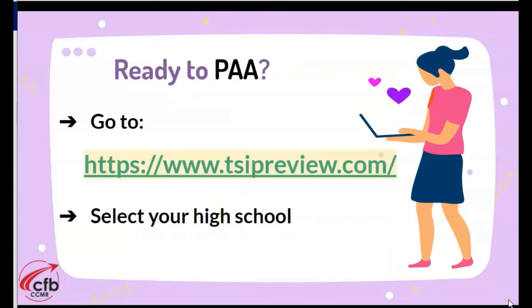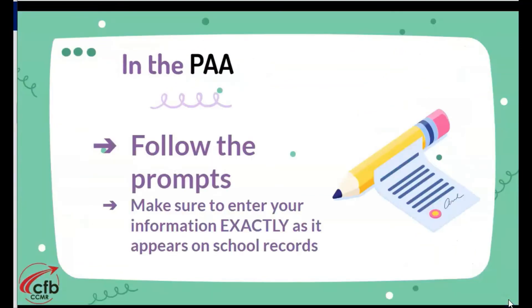You can go to tsipreview.com in order to take the PAA. You select your high school and then follow the prompts. Make sure you enter your information exactly how it appears on the school records. If you have two last names, make sure you enter two last names. If you have one last name, make sure you only enter one.